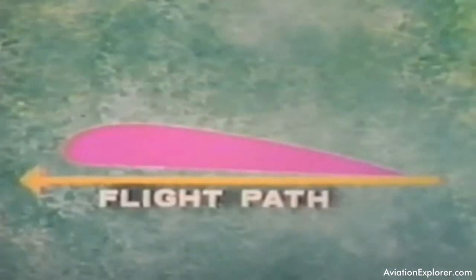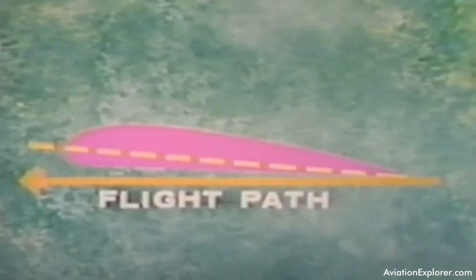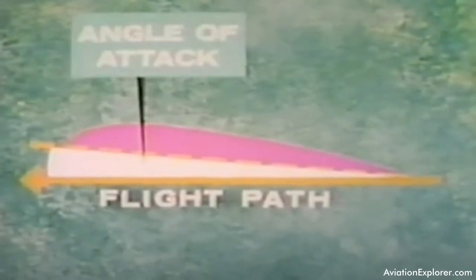The center line or cord line of the airfoil, however, even in level flight, forms a small angle with the flight path. We call this angle the angle of attack.